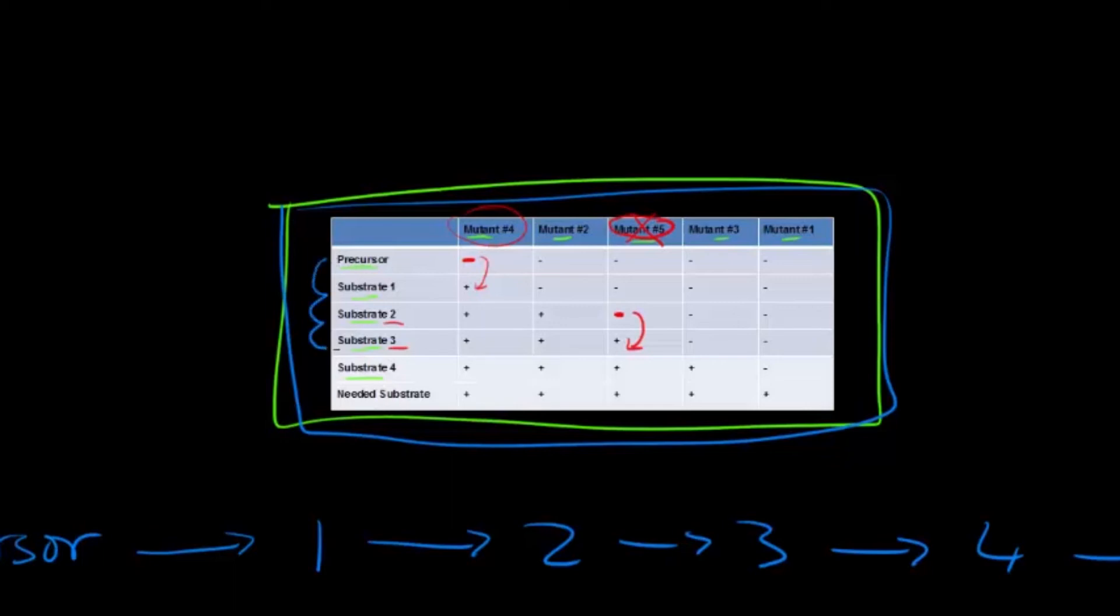Precursor 1, 2, 3, 4, needed substrate. So what you will see won't be as simple as this, it's jumbled up, so you just kind of have to figure it out. And if you kind of follow this pattern, you should be fine.